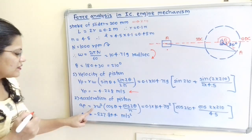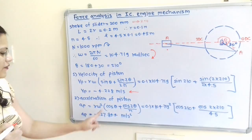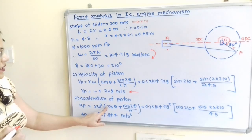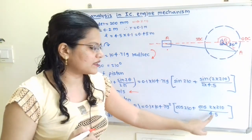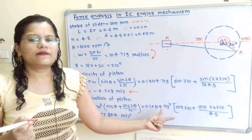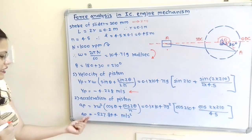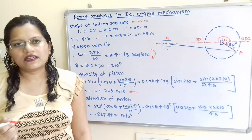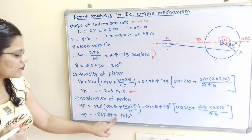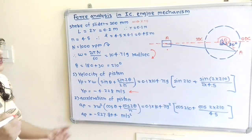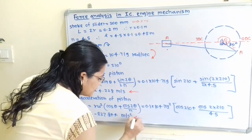For acceleration of piston: AP = R·omega²·(cos theta + cos 2theta / N). Substituting R = 0.1, omega = 104.719, cos 210°, cos 420°, and N = 4.5, the answer is -827.844 m/s². The negative sign indicates the direction is towards the left hand side.